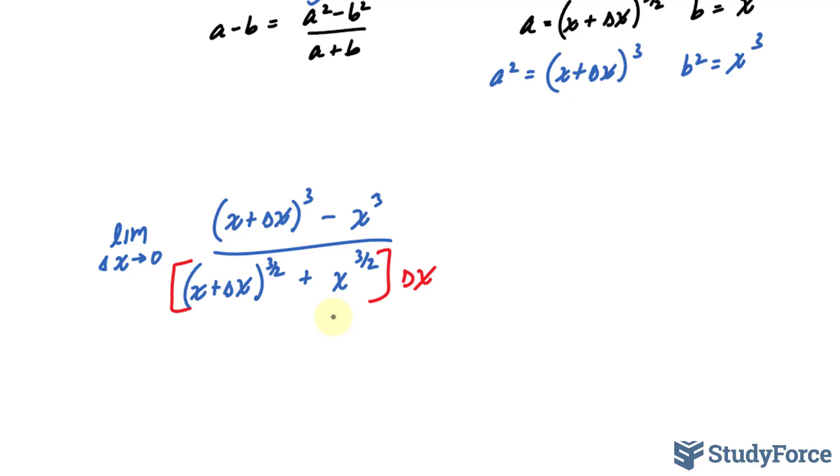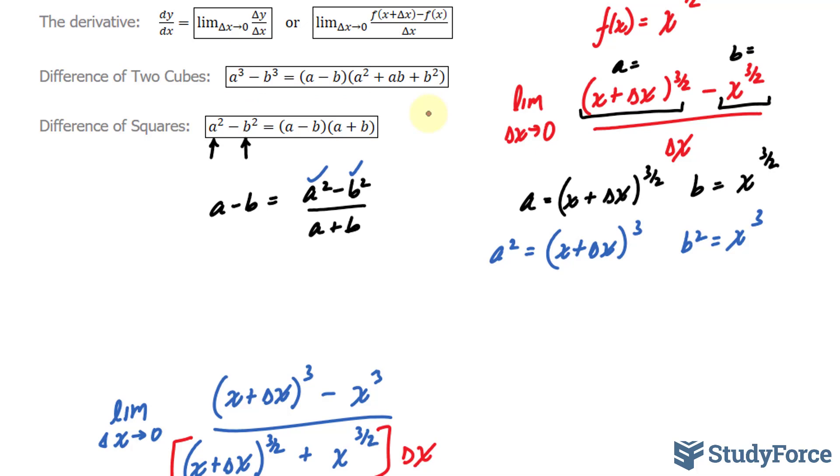Now you have to do a second algebraic manipulation and that involves a difference of cubes. This numerator is a difference of cubes and the formula for a difference of cubes is shown right here. So I'll apply the same technique by setting this term as a and this term as b. Now technically you're supposed to use different letters but just for the sake of simplicity I'll use a and b again.